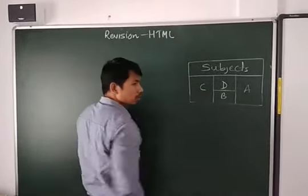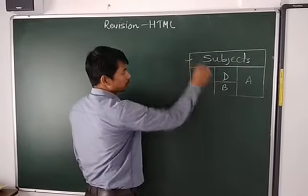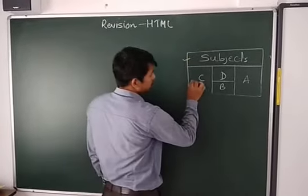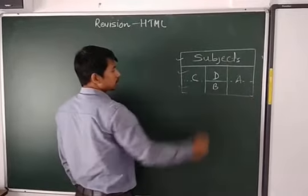Now first of all you have to see how many rows are there. So this one will be one row, then if you see here you can take it as this one is the second row and this one is the third row.